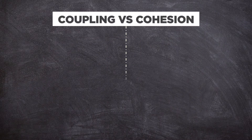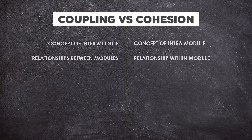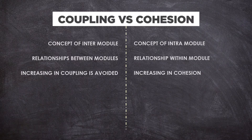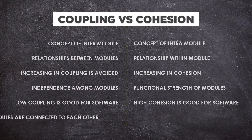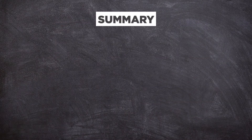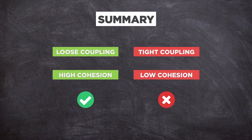Now we will see the difference between coupling and cohesion side by side. Coupling is the concept of inter-module relationships, while cohesion is the concept of intra-module relationships. Increasing coupling is avoided for software, while increasing cohesion is good. Coupling represents independence among modules; cohesion represents the functional strength of modules. Loosely coupled gives the best software, whereas highly cohesive also gives the best software. In coupling, modules are connected to other modules; in cohesion, a module focuses on a single thing. In summary, loose coupling and high cohesion are desirable, whereas tight coupling and low cohesion can lead to problems in the long run.